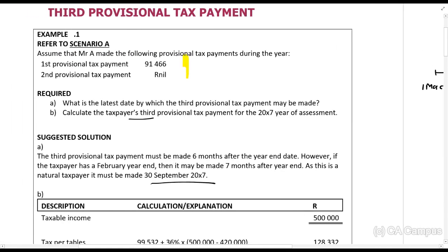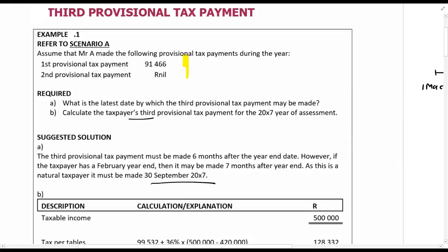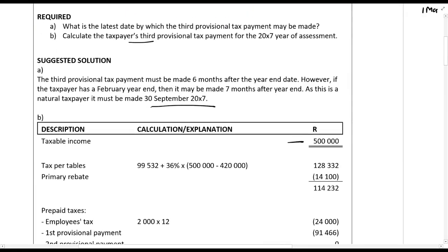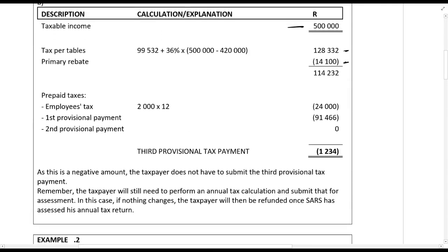Now, calculate the third provisional tax. If we go to the scenario, his taxable income for 20x7 was R500,000. So, R500,000 — calculate the tax from the tables, there are your rebates. Remember, all of these are my own tax tables; you need to use the correct ones in the exam, which are in your cycle student handbook, or they will be provided in the exam. Less the employee's tax, there's the first provisional, there's the second provisional.